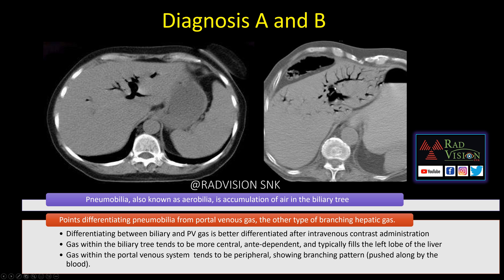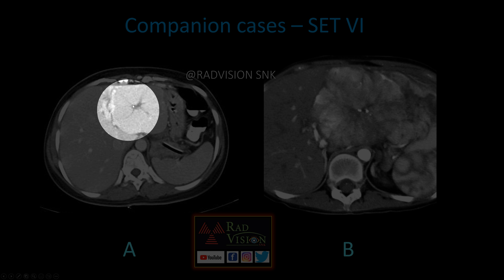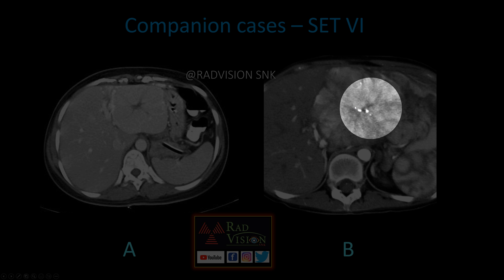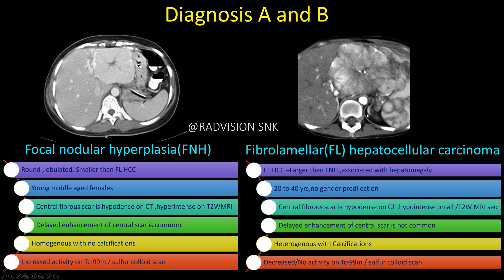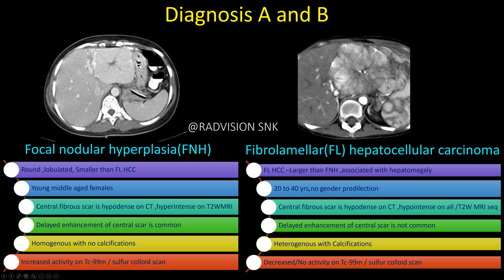Next case shows a well-defined lobulated lesion with a central hypodense scar and radiating bands — this is FNH. The other case shows a large lobulated lesion with a central scar showing calcifications — this is fibrolamellar hepatocellular carcinoma. FNH is smaller, common in young middle-aged females, with a hypodense central scar that is hyperintense on T2 with delayed enhancement, homogeneous, no calcifications, and increased Tc-99m sulfur colloid activity. Fibrolamellar HCC is larger, seen in 20–40 years with no gender predilection, central scar hypointense on all MRI sequences, no delayed enhancement, heterogeneous with calcifications, and decreased sulfur colloid activity.